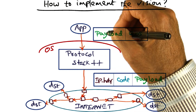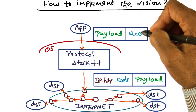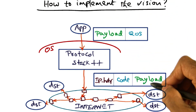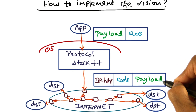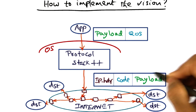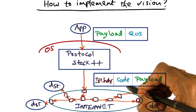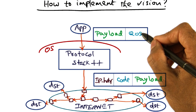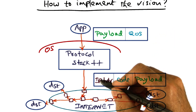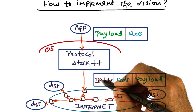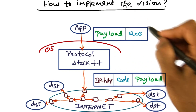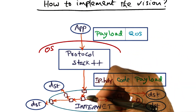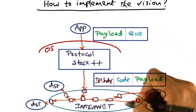The application is not only providing a payload, but it is giving quality of service constraints. And the operating system, in addition to the payload, generates or synthesizes code corresponding to these quality of service instructions, slaps on the IP header for where this particular message is eventually to be delivered, and hands it over to the internet.